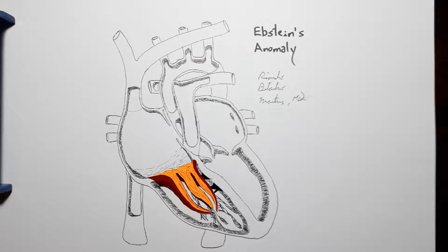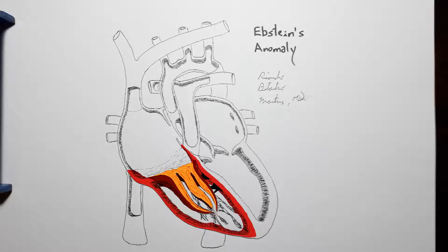Since these leaflets cannot separate adequately from the ventricular myocardium, they will tend to remain very close to it and thus not move upwards, causing the tricuspid annulus to be apically displaced.